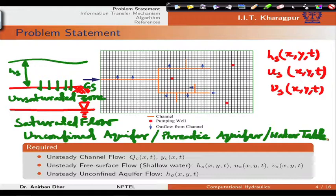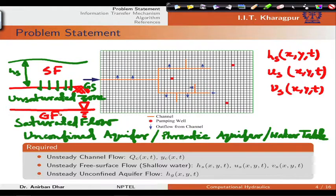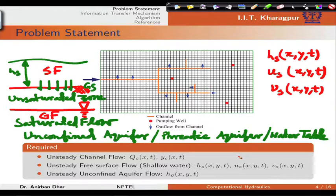In this case we have surface flow (Sf) and below the water table we have ground water flow (Gf) for the unconfined aquifer system. There will be recharge through the unsaturated zone towards the ground water table. After getting this recharge we can solve the ground water equation. For the unsteady unconfined aquifer flow problem, we need to find Hg, the hydraulic head with respect to datum.